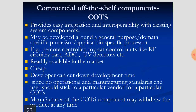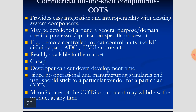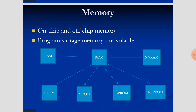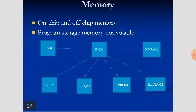COTS (Commercial Off-The-Shelf) components provide easy integration and interoperability with existing system components. For example, RF circuitry, ADCs, and ultraviolet detectors are readily available. Developers can take these devices, put them into the design, and develop the entire product at reduced cost. Instead of designing these devices from scratch, you can get them cheaply and easily fix them into the circuits.